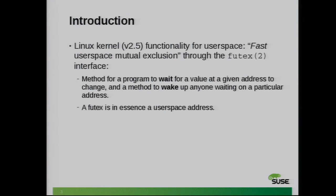Futexes were introduced around 2002 for the 2.5 kernel. It's basically functionality for user space to implement fast mutual exclusion, through a system call. If you read the man page, it'll mention that in essence it's a method for a process to wait for a given value on a specific address to change, and at the same time it's a method to wake up any blocked process on a specific address.